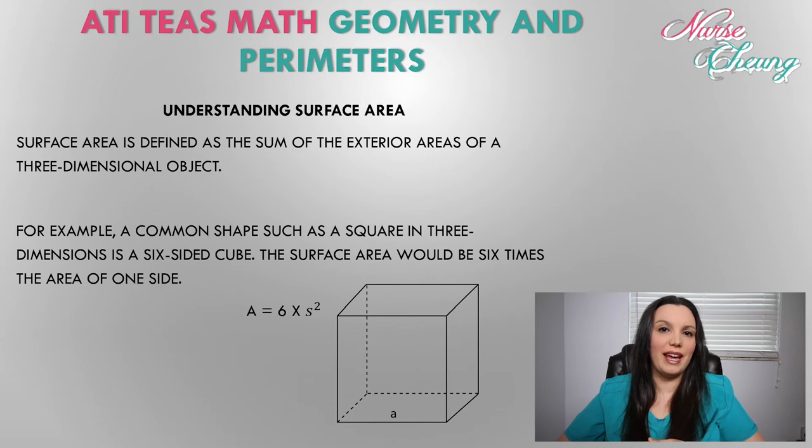Now that we understand how to find the area for two-dimensional objects, we need to start looking at the surface area of three-dimensional objects. So the surface area is defined as the sum of the exterior areas of a three-dimensional object. So for example, a common shape such as the square in three-dimensional form is a six-sided cube.